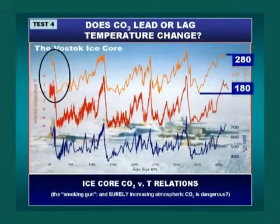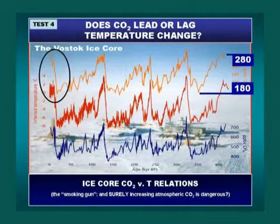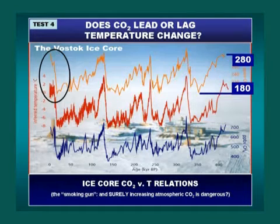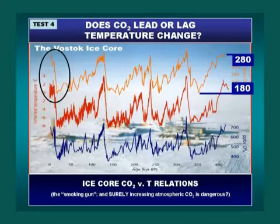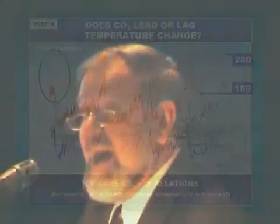Test number four is this wonderful diagram, probably one of the most exciting science diagrams of the 20th century, from the Vostok Ice Core. The orange curve at the top is the carbon dioxide, and the red curve in the middle is the temperature. Ignore methane in blue along the bottom. We see a very close correlation between the orange and the red curves, which led people to immediately say, 'Aha! There's the smoking gun.'